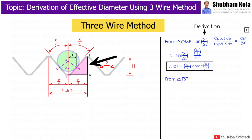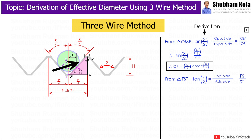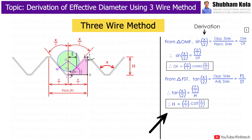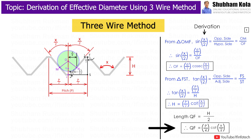Now considering the second triangle FST, where this angle is 90 minus x/2 and angle STF is x/2. If we consider tan(x/2), it equals opposite side FS to adjacent side ST, where distance FS is pitch/2 and ST is the depth of thread, i.e. capital H. Therefore, the value of H will be (P/2) × (1/tan(x/2)), and 1/tan(x/2) is cot(x/2). From the figure, length QF is half of the depth of thread H, so QF equals (P/4) cot(x/2), because H = (P/2) cot(x/2).